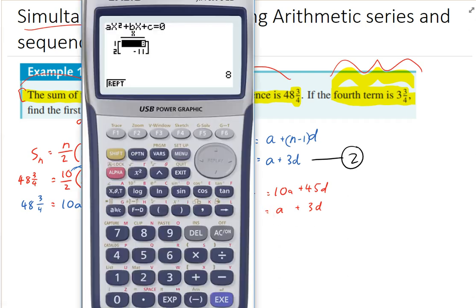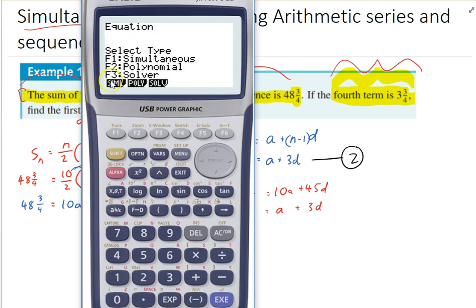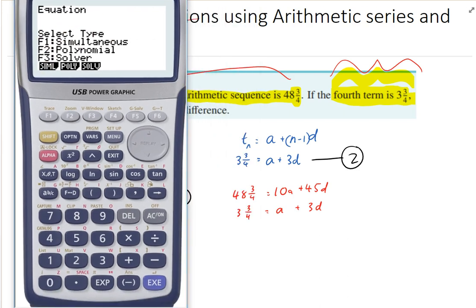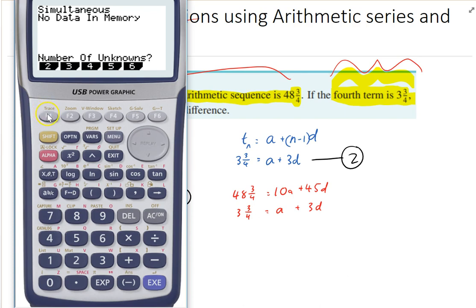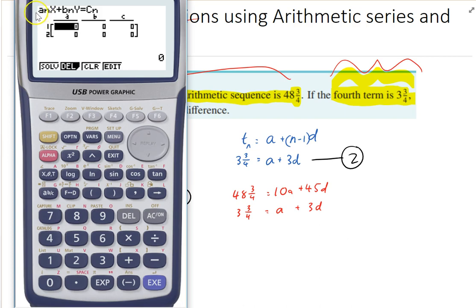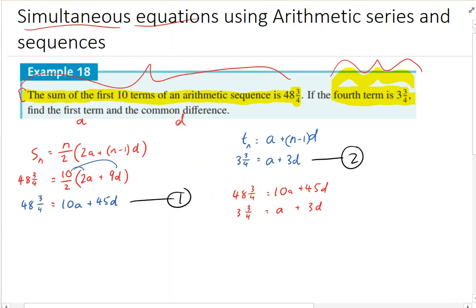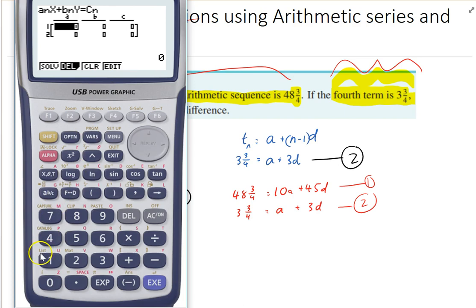Or calculator. Let's go here. Maybe we'll go to F1, Simultaneous Equations. Number of Unknowns 2. So just be aware it wants it in a number, a number times x plus a number times y equals just a number. So we have that. We've got a number plus 3d equals that thing there. So my a value for, we'll call this, this one's equation 1, this one's equation 2. Let's not get confused. Okay. So 10.